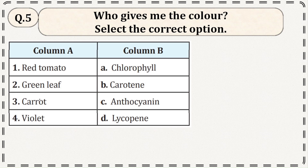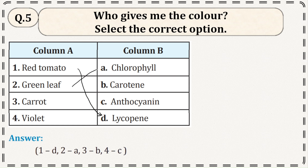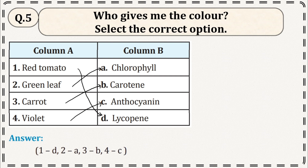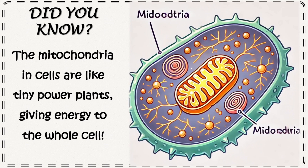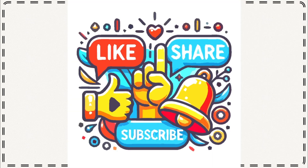Match the column: Column A — red tomato, green leaf, carrot, violet. Column B — chlorophyll, carotene, anthocyanin. The video explains which pigment gives color to each plant part. Mitochondria in cells are like tiny power plants giving energy to the whole cell, though very small in size. If you liked this video explanation, please like, share, and subscribe to the channel.